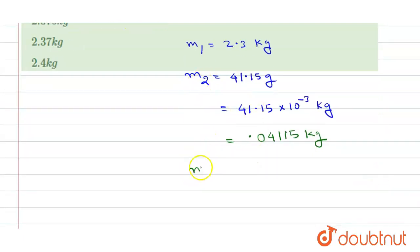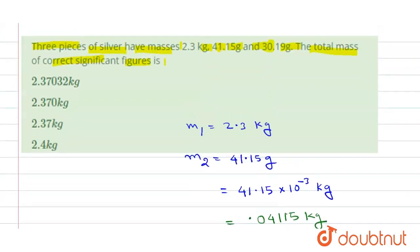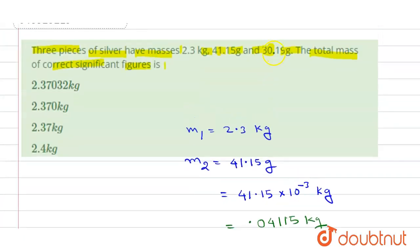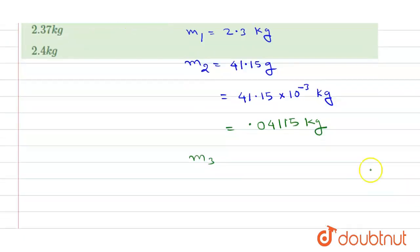Next is m3. It is given as 30.19 grams. So in kg it will be 0.03019 kg.